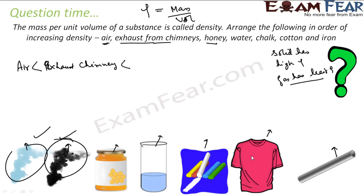If you consider cotton, the actual real cotton is very light and has very high volume for a small mass. So the next in the order will be cotton. Then we take liquids — comparing water and honey. Honey is more thick than water, so the density of honey is more.